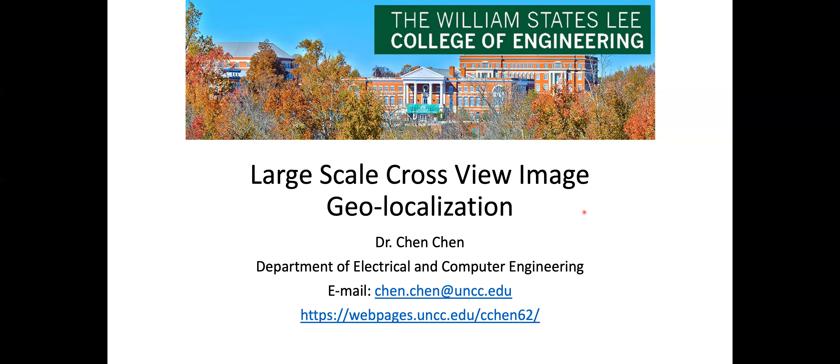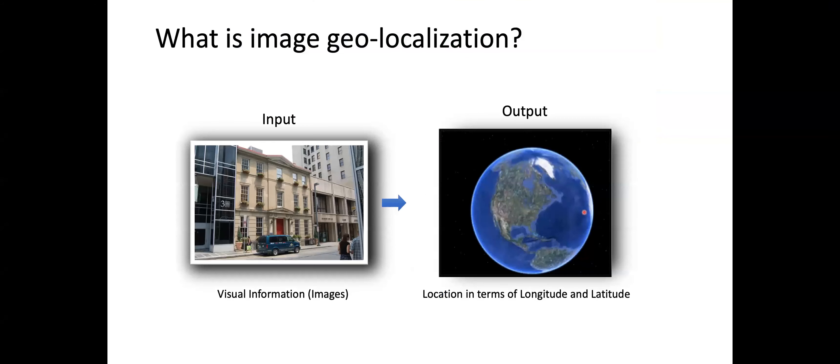I'm going to talk about large-scale cross-view image geolocalization. The objective of image geolocalization is that for a query input image — for example, a photo taken by a tourist — we want to know where this photo was taken, specifically the GPS location.